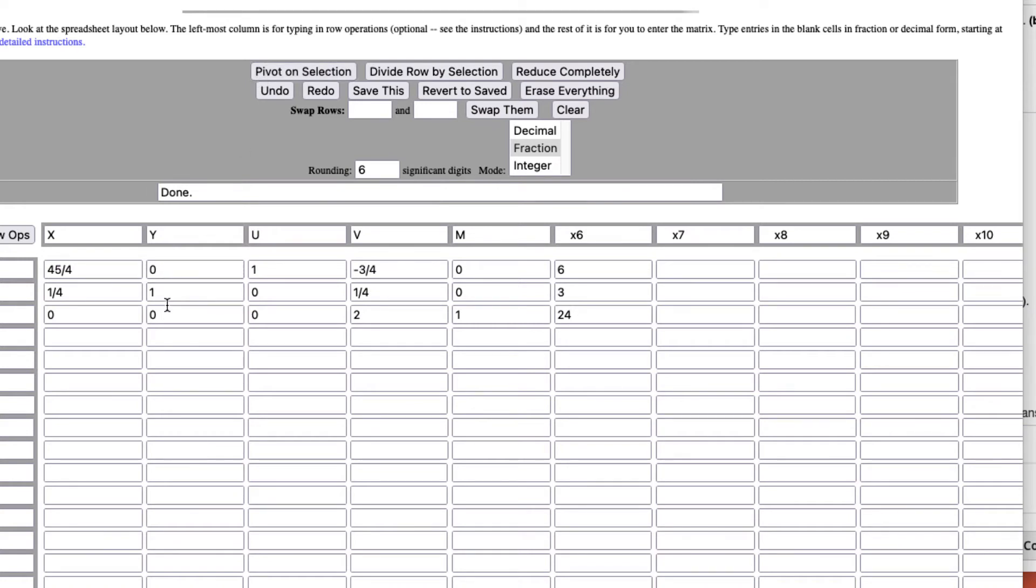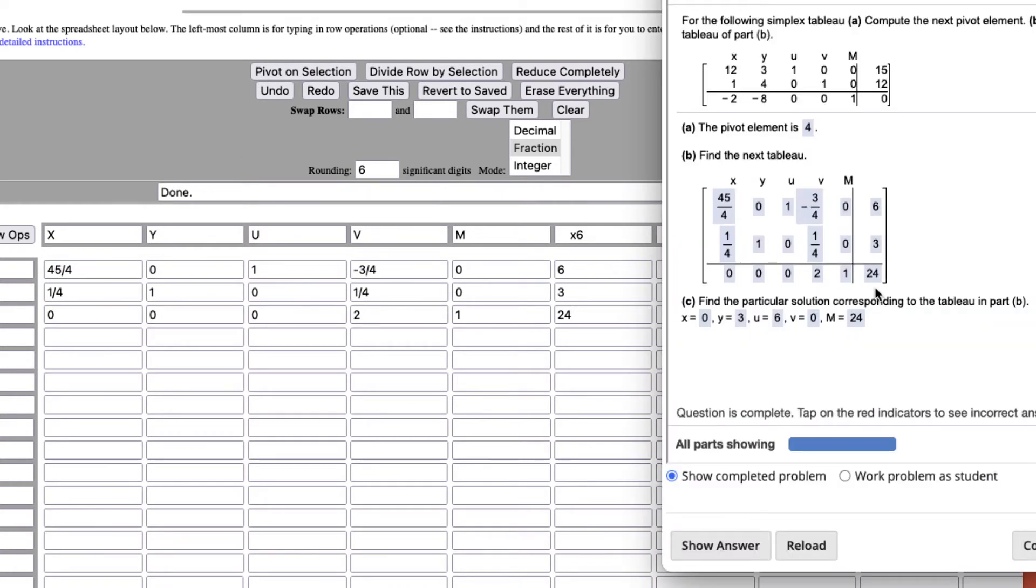Makes it a 1, 0 above and below, and solves the system. Here's the next tableau. 50, 45 fourths, 0, 1, negative 3 fourths, 0, and 6, etc.